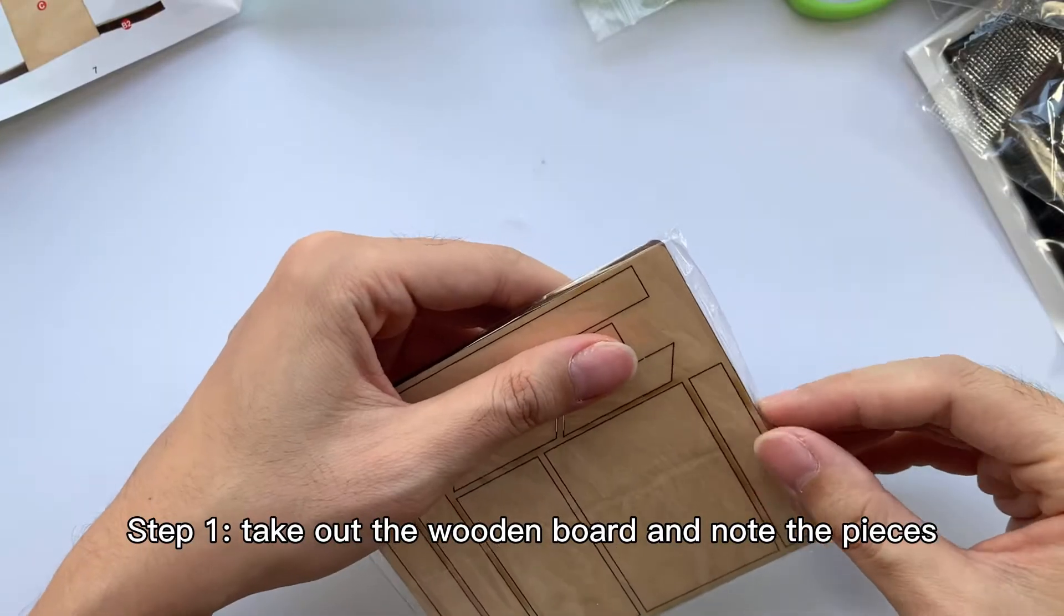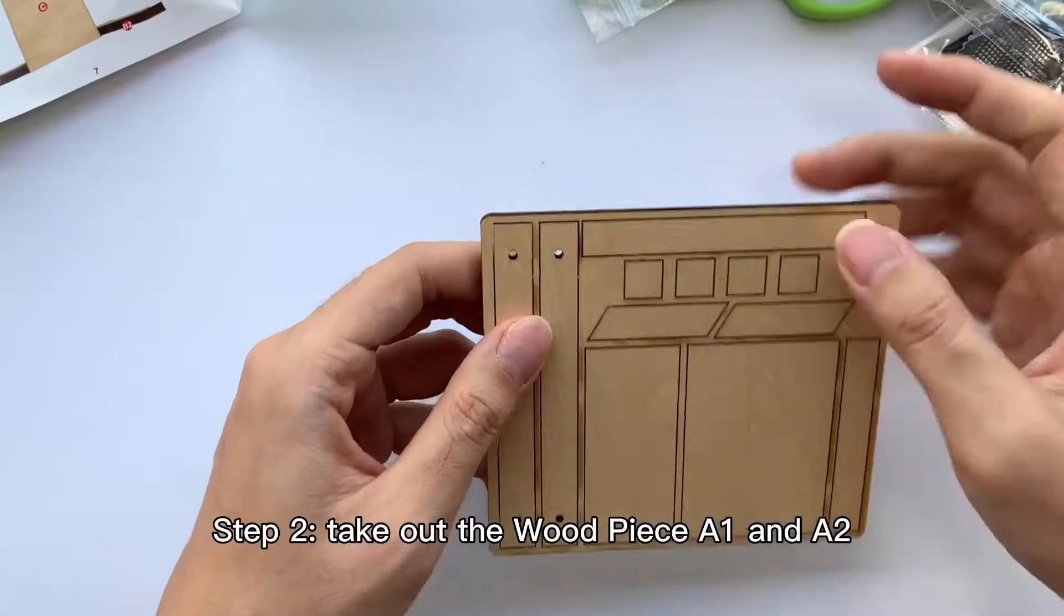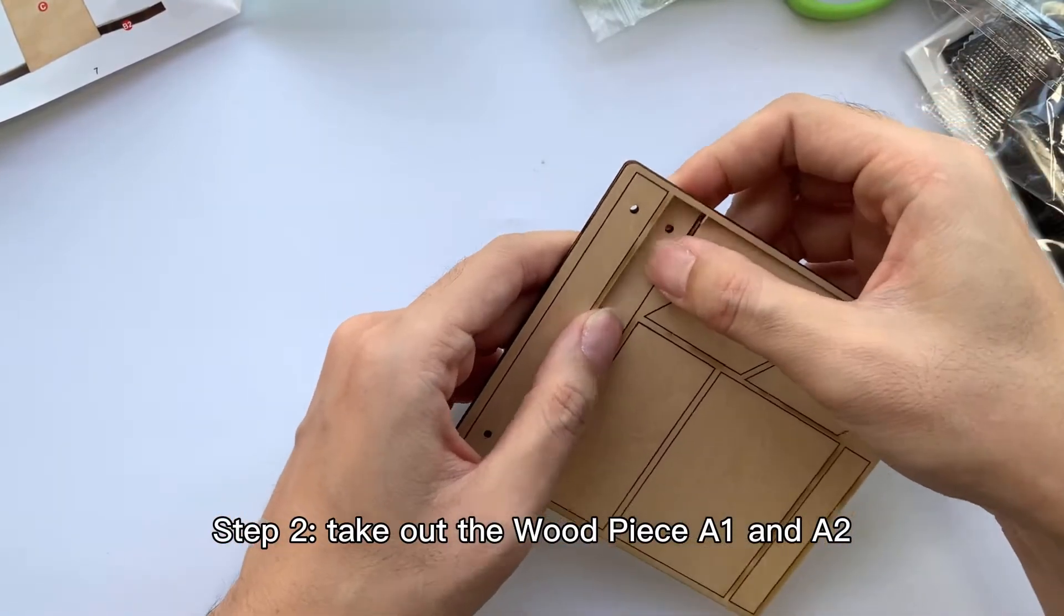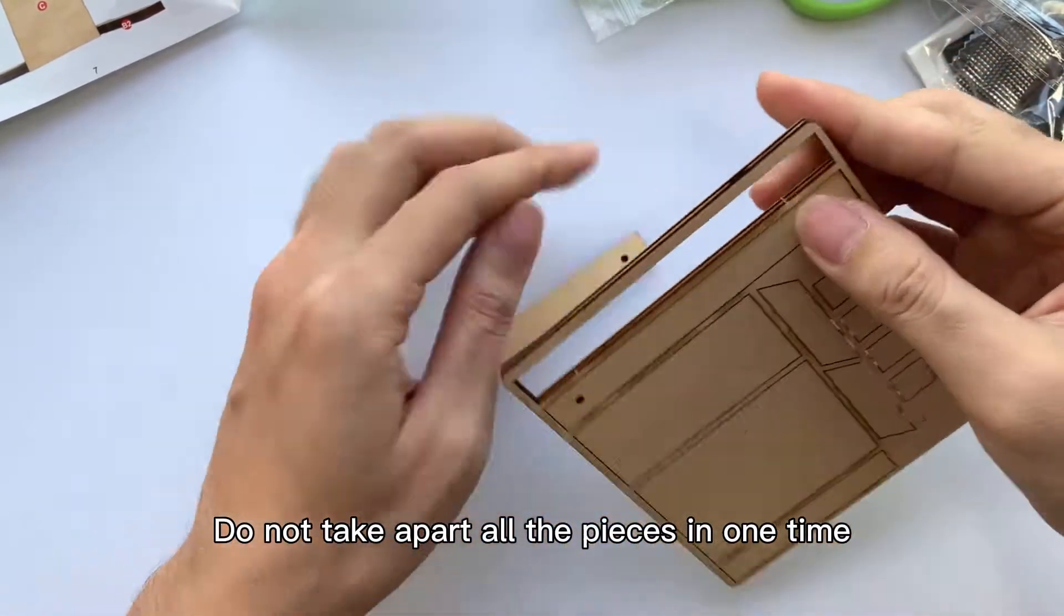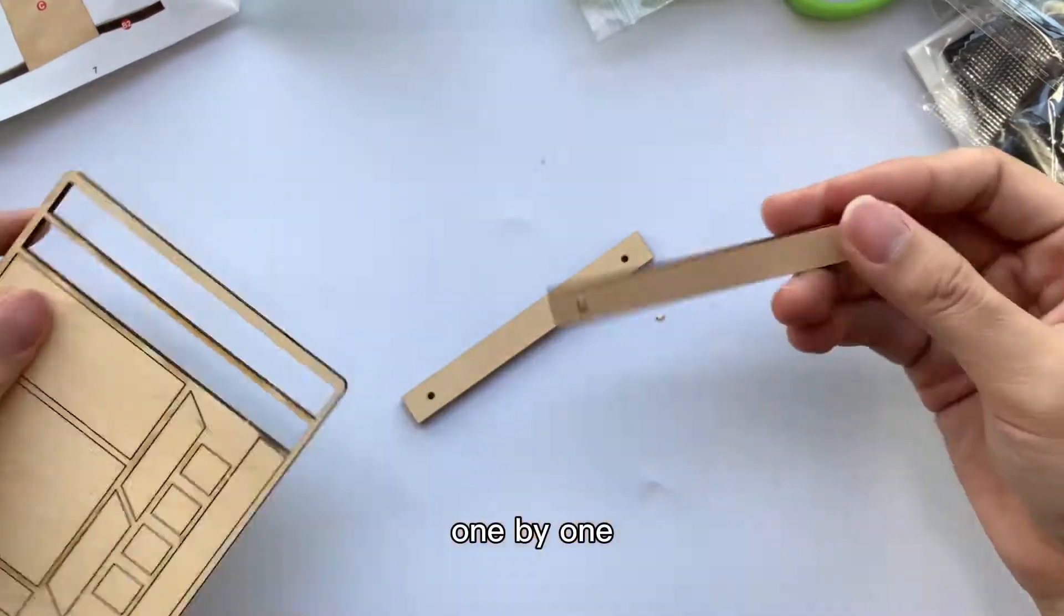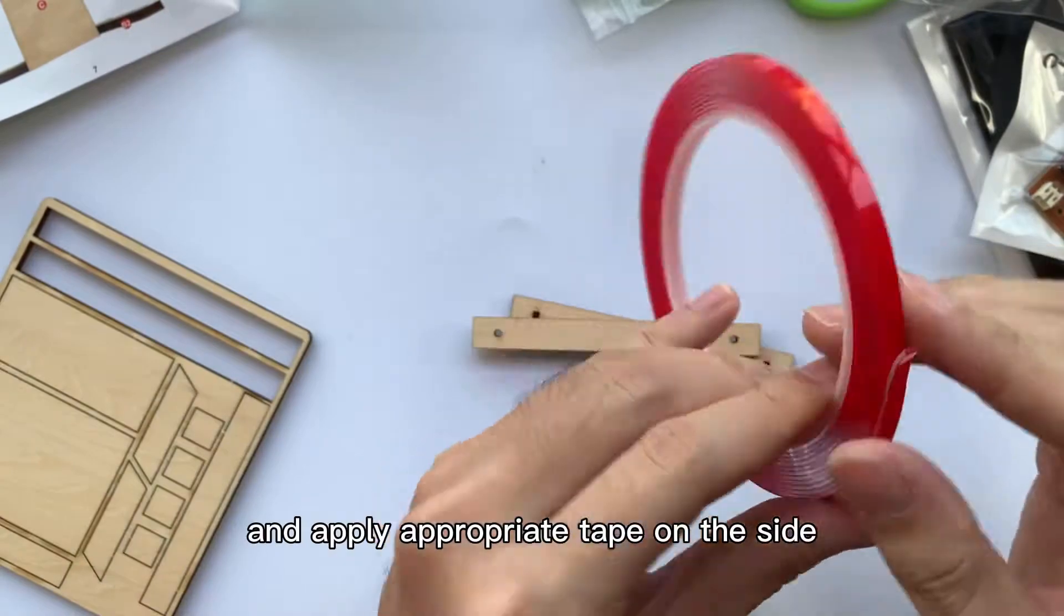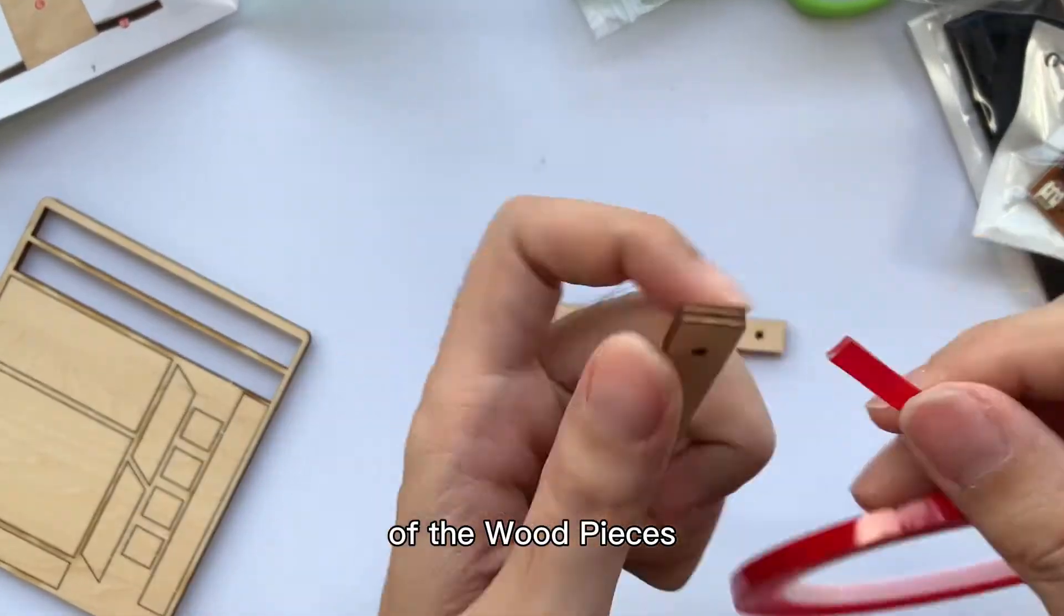Step 1: Take out the wooden board and note the pieces as per the instruction. Step 2: Take out the wood piece A1 and A2. Do not take apart all the pieces in one time. Please follow the order of the steps to take the pieces one by one. Then take out the double-sided tape from the package and apply appropriate tape on the side of the wood pieces A1.